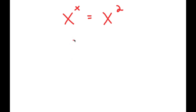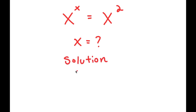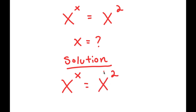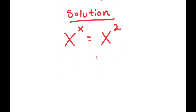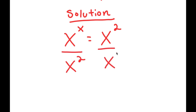So in this video, I'm going to be solving the equation x to the power of x is equal to x to the power of 2. My only variable in this equation is x, so that's obviously the variable I'm solving for. I'm going to first write my equation down: x to the power of x equals x to the power of 2. I'm going to start by dividing both sides by x to the power of 2, giving me x to the power of x over x to the power of 2 equals x to the power of 2 over x to the power of 2.